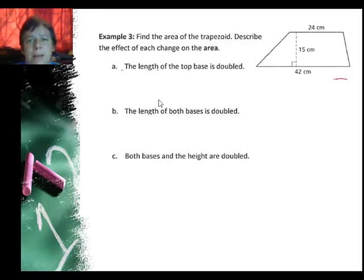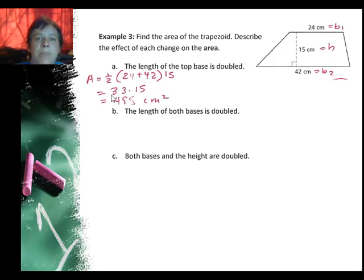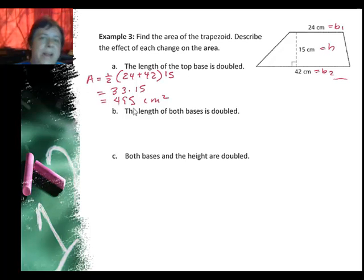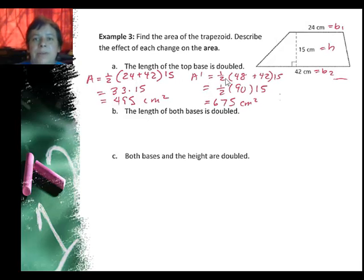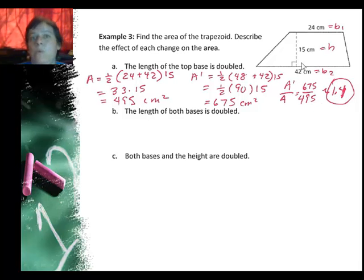In example three, we're going to find the area of a trapezoid and describe the effect of each change. First, we double the top base. Since I'm only changing one dimension, this is a tricky one — you want to calculate the areas. The original area uses the trapezoid formula: ½(b₁ + b₂) × h, giving 33 × 15 = 495 cm². Doubling the top base from 24 to 48 and applying the same formula: ½(48 + 42) × 15 = 675 cm². The factor is 675/495 = 1.4, so the new area is 1.4 times the original.